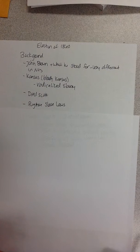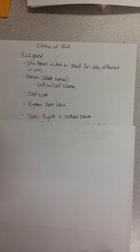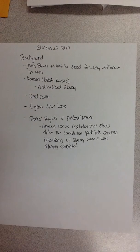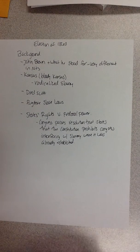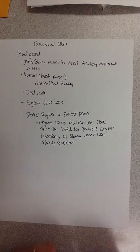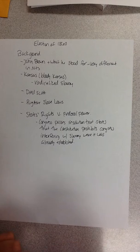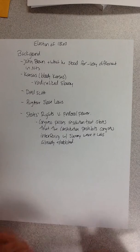The North was not going to like the Dred Scott decision. The Fugitive Slave Laws forced the North to actually recognize slavery and support it — they had to let bounty hunters in to retrieve escaped slaves. On states' rights versus federal power: Congress passed resolutions saying the Constitution prohibits Congress from interfering with slavery where states had already established it. This is the climate heading into the Election of 1860 — a lot of things making both the South and the North angry.